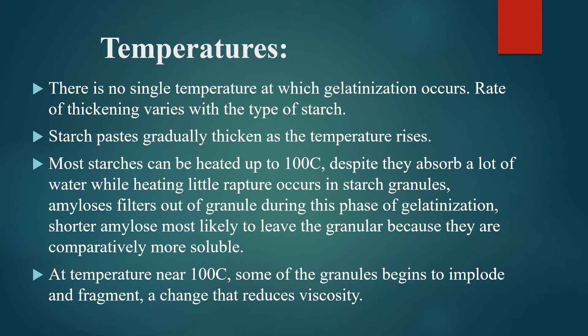This is why when we use a lot of starch — for example in custard cookery — and we raise the temperature to 100 degrees Celsius and keep on stirring, the starch is completely out of the granules. The granules implode and the custard becomes thinner. So excess starch and high temperature reduces viscosity, making the final product thinner rather than thicker.